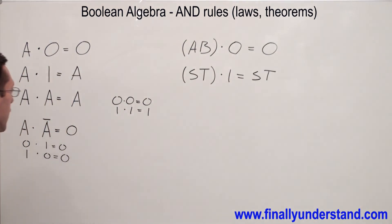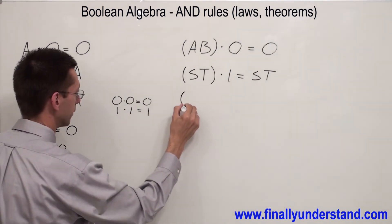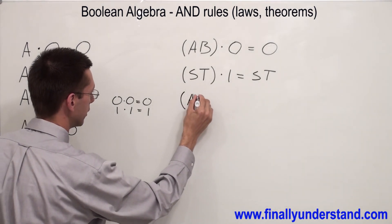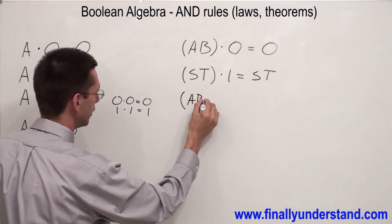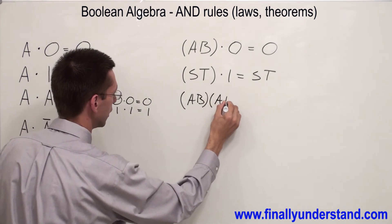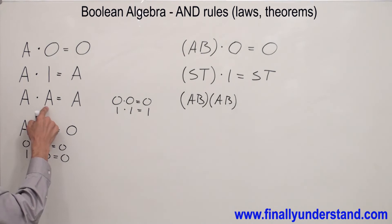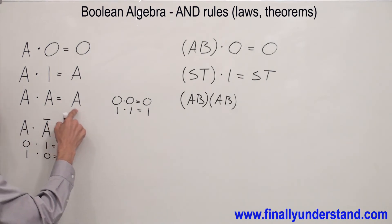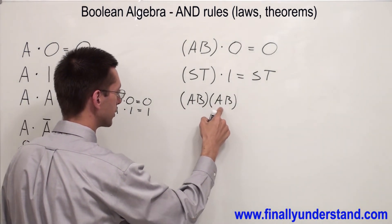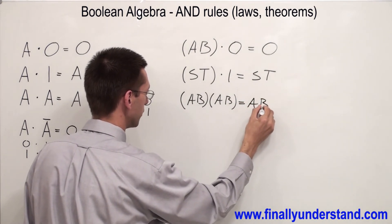Now let's say I have A·B times A·B times A·B. We said that A times A is equal to A. So that's why in this case A·B times A·B times A·B is equal to A·B.